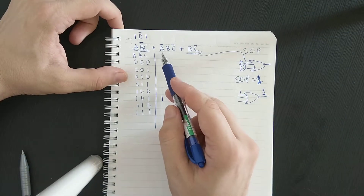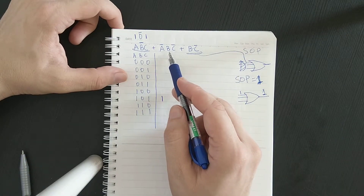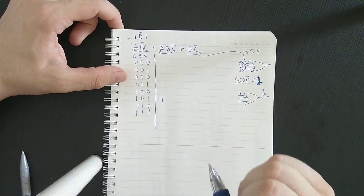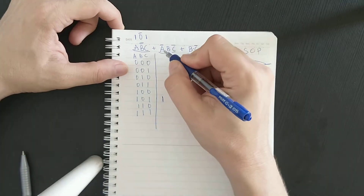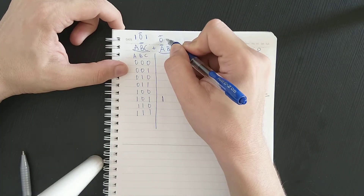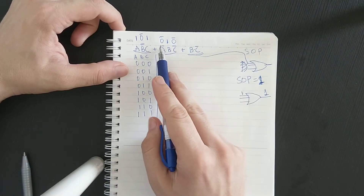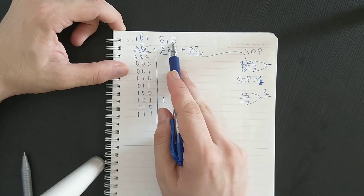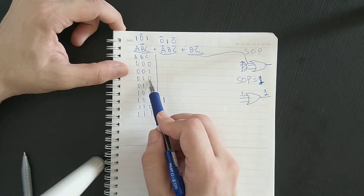Next, let's look at a'·b·c'. This term equals one in only one case: when a is zero, b is one, and c complement is one — meaning c is zero. So the input combination 0-1-0 gives an output of one, and we put one there.